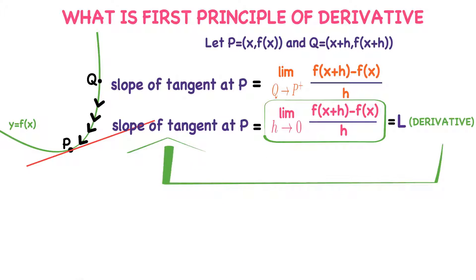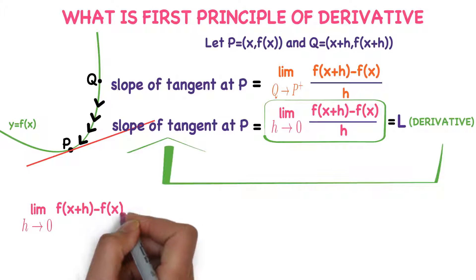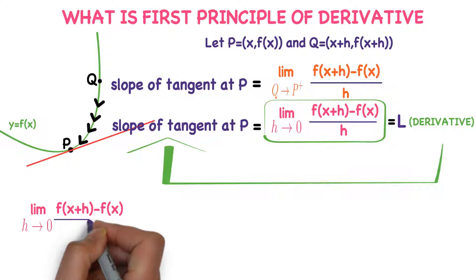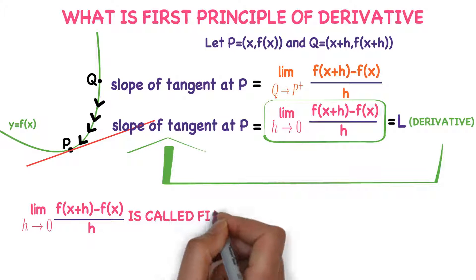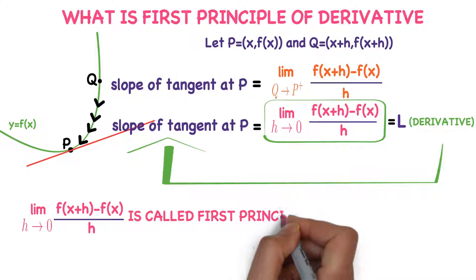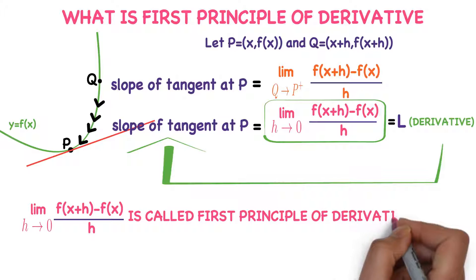y equals f(x) at P. So, in conclusion, limit h tends to zero [f(x+h) - f(x)] divided by h. What is this expression? This is called the first principle of derivative. I hope you understand this class.